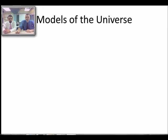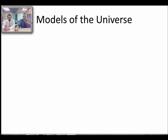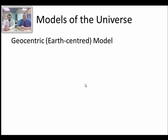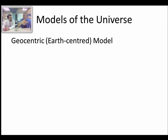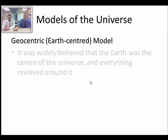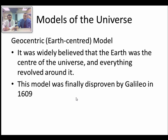So, models of the universe. Once upon a time it was thought that the Earth was the center of the universe and everything rotated around us — all the things in the sky were just big spheres rotating around. Then along comes Galileo, and in 1609 he proves that wrong.